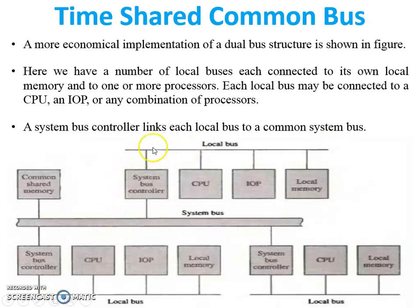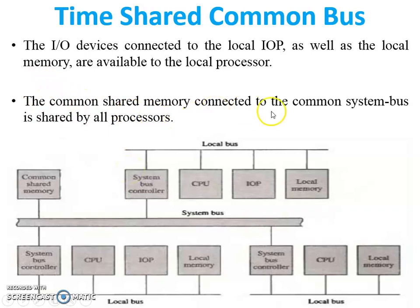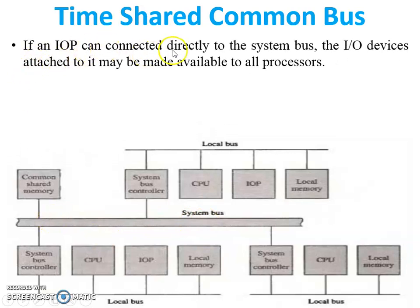A local bus is connected to the system bus via the system bus controller only. The IO devices connected to the local IOP as well as the local memory are available to the local processor — meaning IO devices are connected to the IOP or local memory. The common shared memory connected to the common system bus is shared by all processors. If an IOP is directly connected to the system bus, the IO devices attached to it may be made available to all processors, meaning all input/output devices become accessible to all processor modules.